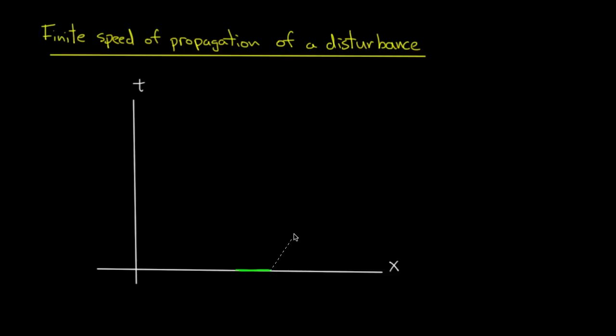And the reason for that lies in the characteristics. In order to compute the value of u, we need to be able to trace back along a characteristic. And so the disturbance that I made only affects the values within this cone determined by the characteristic lines on the edge of the disturbance. So this is the region where the disturbance is felt.